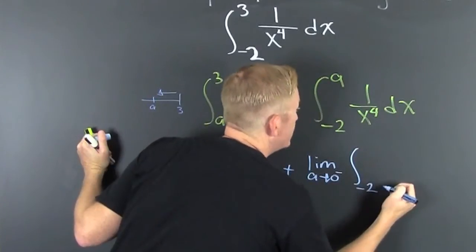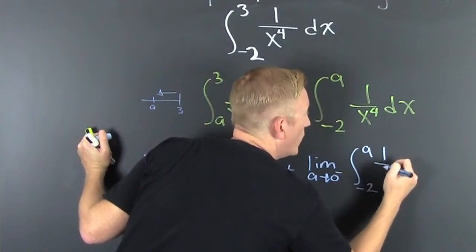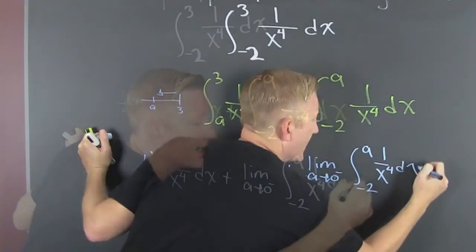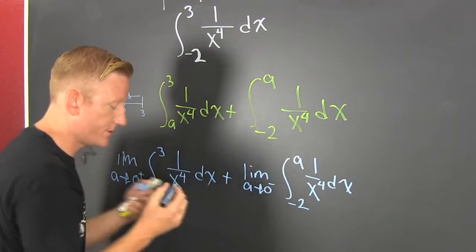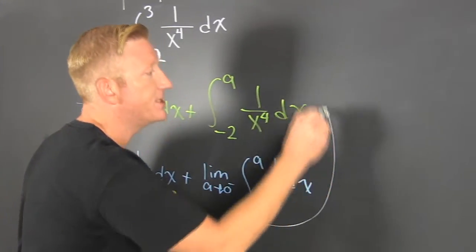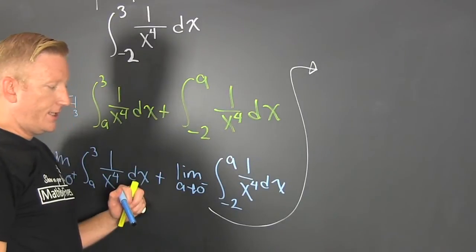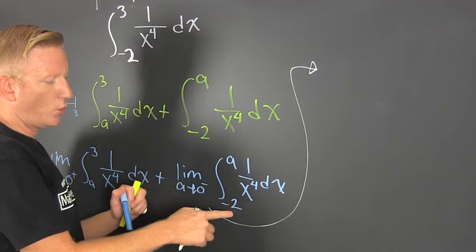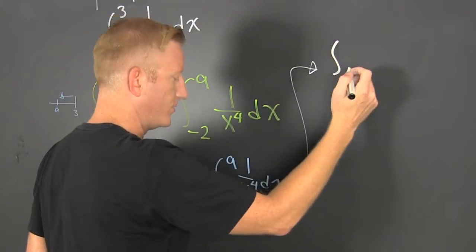Then I'm going to add it to the limit as a approaches zero from the left this time, and that's from minus 2 to a of 1 over x to the 4 dx. Let's handle this one first.